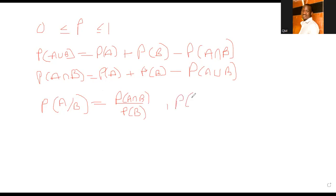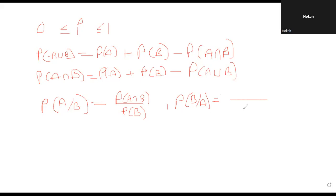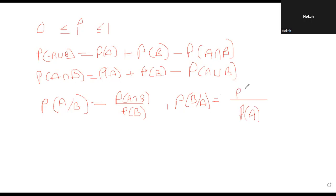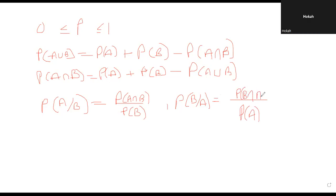Can somebody help us expand the probability of B given A? What comes down is the probability of A, and on top we have the probability of B intersection A. So P(B|A) = P(B∩A) / P(A). This is a very key axiom of probability — like special paper one.